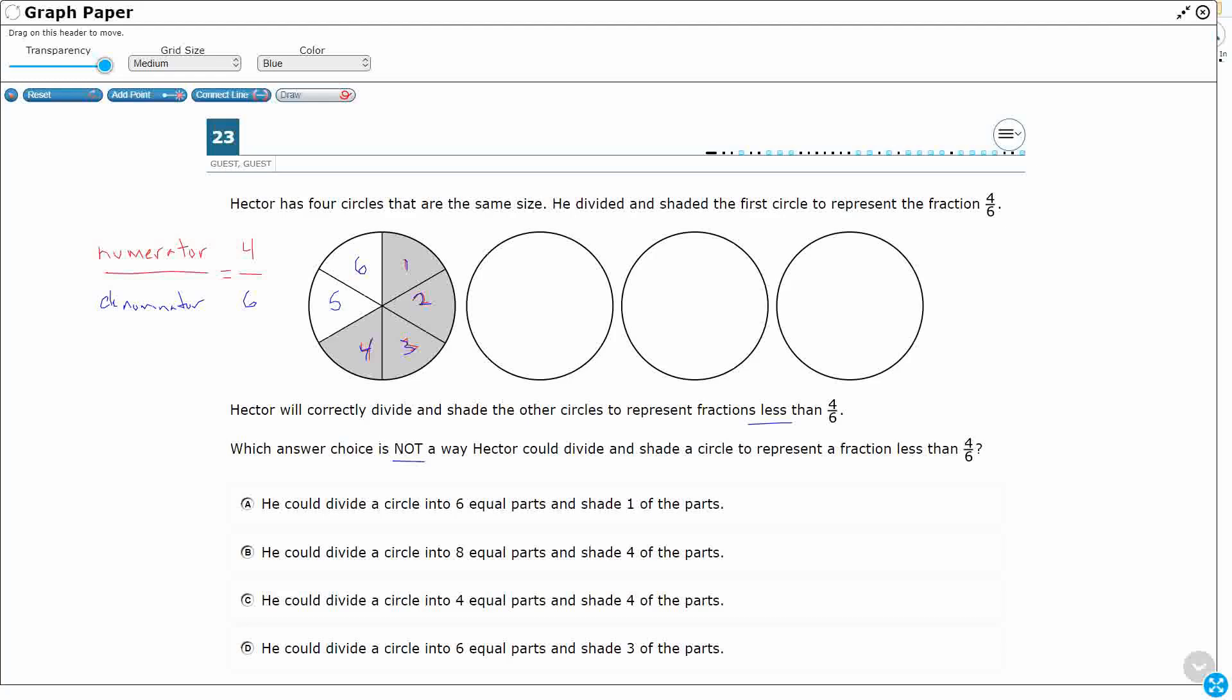He could divide a circle into six equal parts and shade one. Alright, so I'm going to see if I can follow these directions here. I'm going to try my hardest to make these six equal parts. Let's just pretend that they are in case I mess it up.